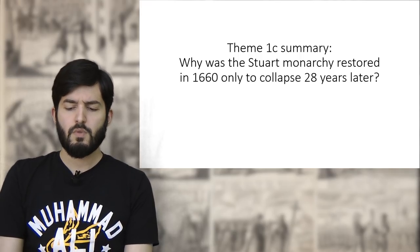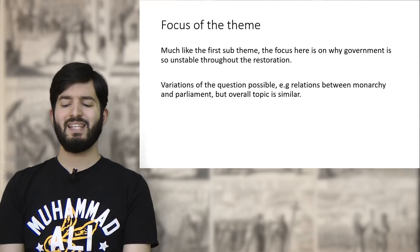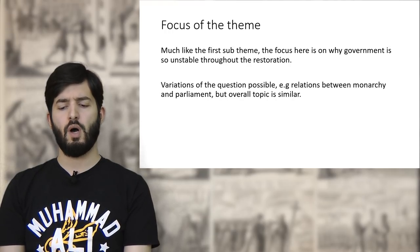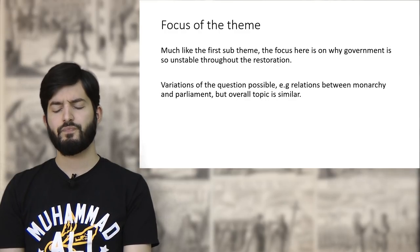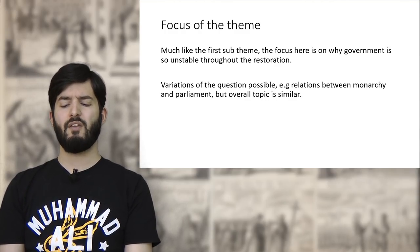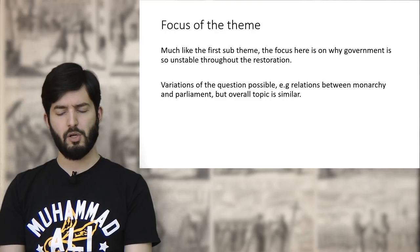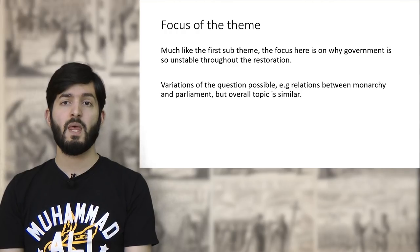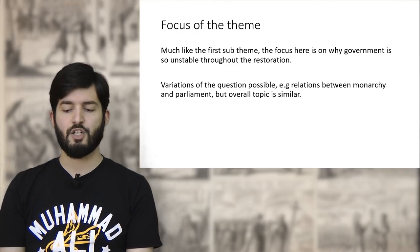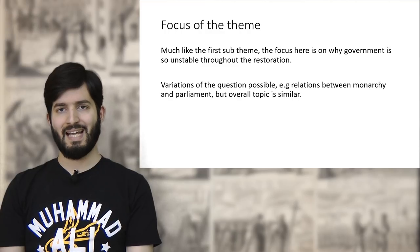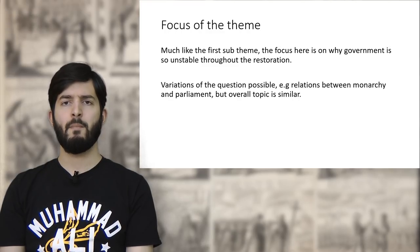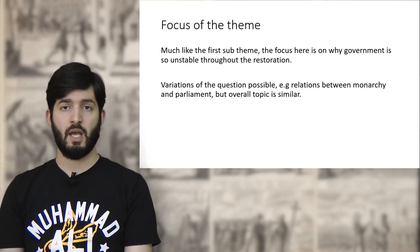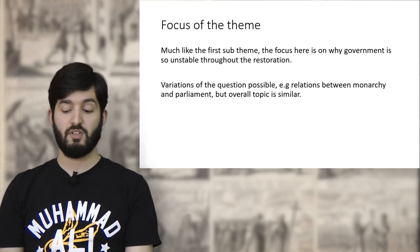The focus of this theme, much like the first one, is again on the reasons why government is so unstable throughout the entirety of the Restoration. There are a variety of different questions possible — about relations between monarchy and parliament, causes of instability, etc. — but the overall topic tends to be quite similar, and most of these points are fairly relevant and applicable to these various types of questions.